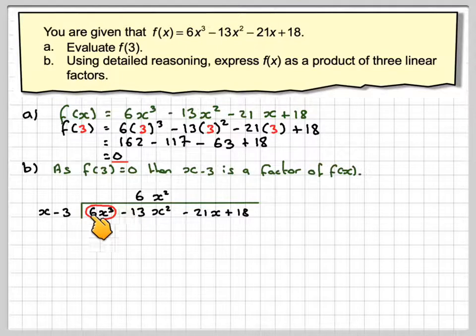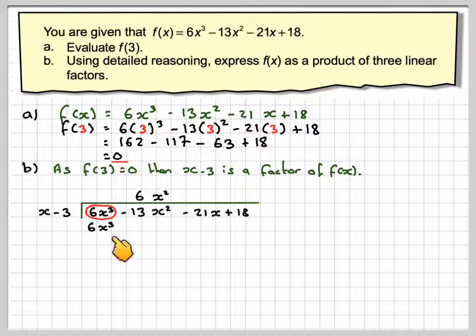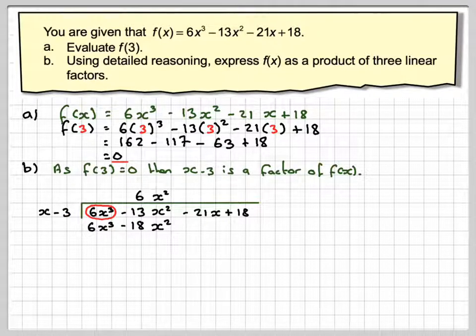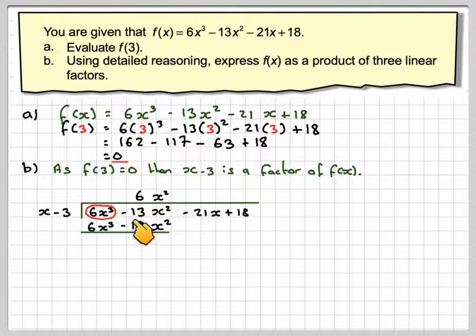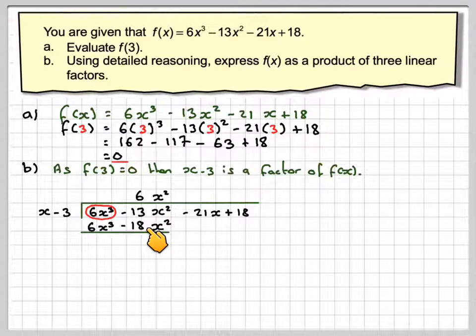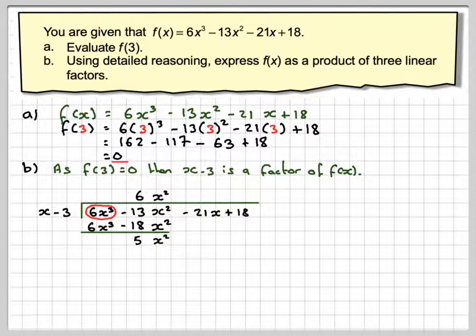6x squared times x gives you 6x cubed. 6x squared times minus 3 gives you minus 18x squared. You now do a subtraction. You have to be careful: minus 13x squared minus minus 18x squared gives you 5x squared. If you're not sure, just do minus 13 minus minus 18 on your calculator. And now you need to bring down the minus 21x.